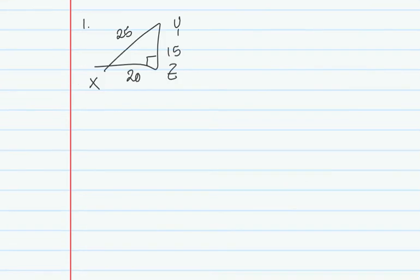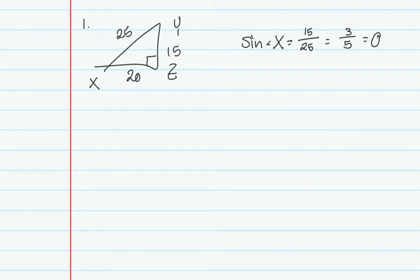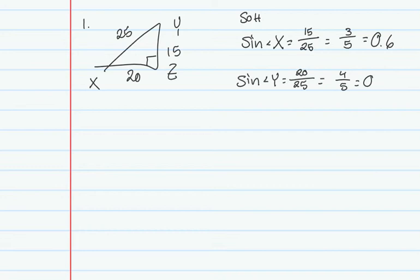In this example, we want to find the sine of X and the sine of Y. The sine of angle X equals the leg opposite, 15, over the hypotenuse, 25, which reduces to 3/5 or 0.6. The sine of angle Y — the side opposite of Y is XZ, or 20, over the hypotenuse XY, which is 25 — reduces to 4/5 or 0.8.